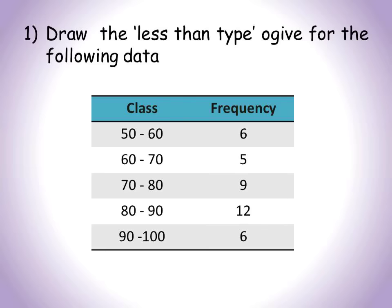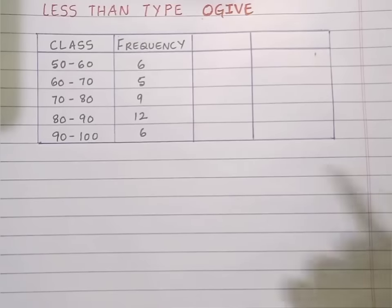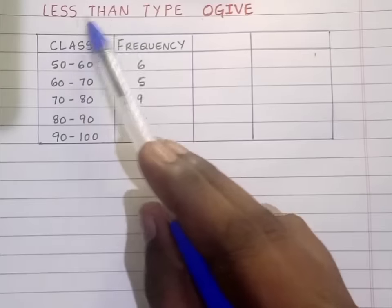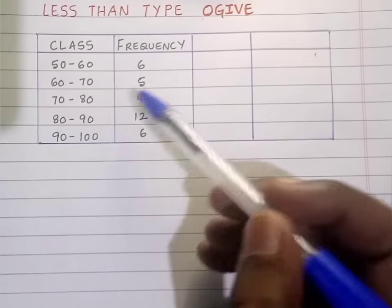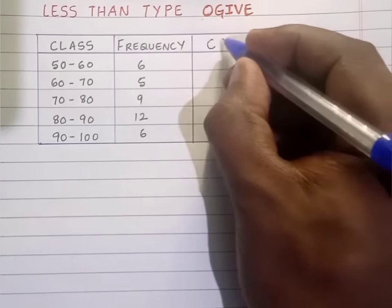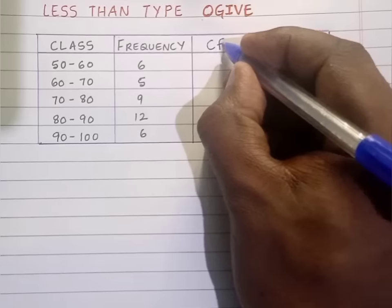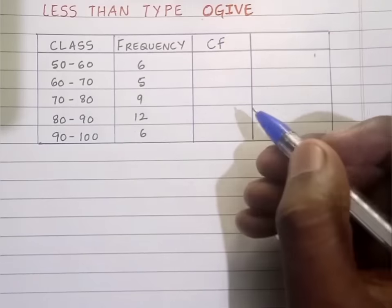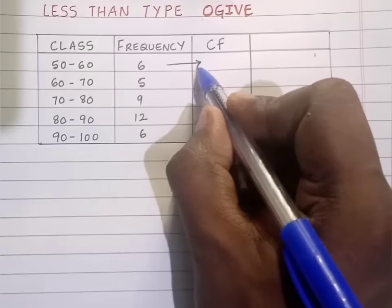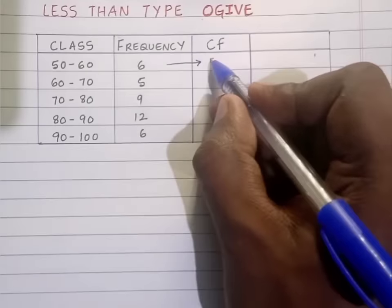First question: draw less than type OJAL for the following data. For the given data, I should draw the less than type OJAL. The first step is finding out the cumulative frequency column. To find cumulative frequency, the first number of frequency is written as it is — it is 6.